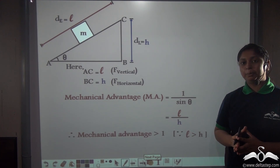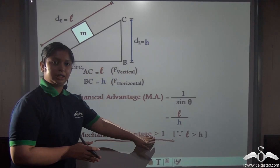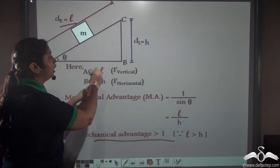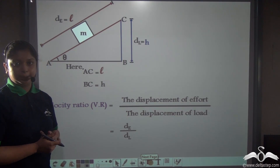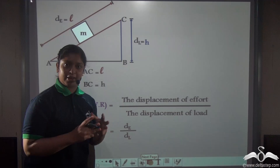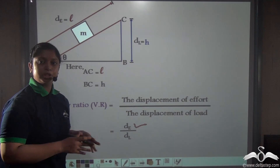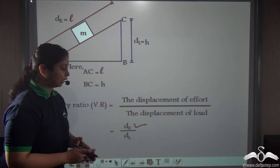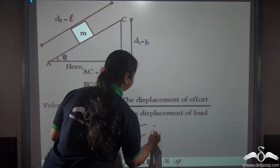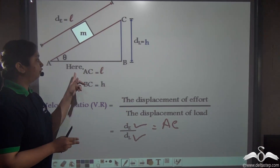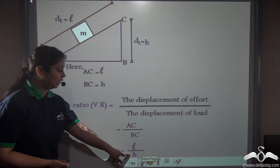Since the length of the inclined plane will always be greater than the height, the mechanical advantage of an inclined plane will always be greater than 1 — in conditions where length is greater than height. Now for the velocity ratio: VR equals displacement of effort divided by displacement of load, denoted DE/DL. Here, displacement of effort is AC = L, and displacement of load is BC = H. So velocity ratio equals L/H.